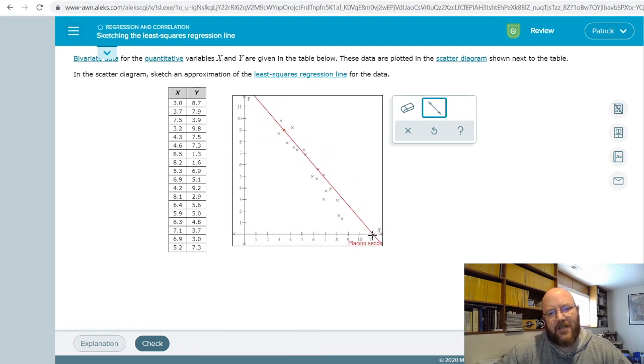And then your second one, what you want to do is rotate this so that you get about half the x's on one side of the line and half on the other, and so that's pretty close right there.